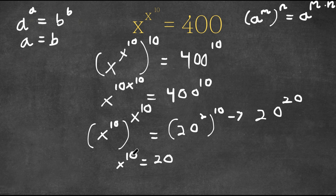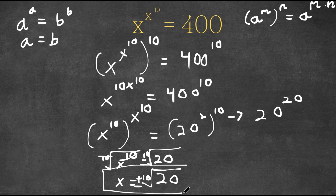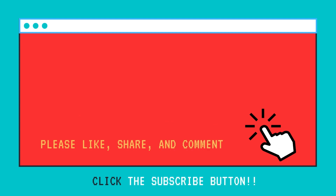Now we want to cancel out this power of 10, so we're going to take the 10th root on both sides. This cancels out, and we have x is equal to the 10th root of 20. And this is actually going to be plus or minus, so these two solutions are going to be our answers. Thank you.